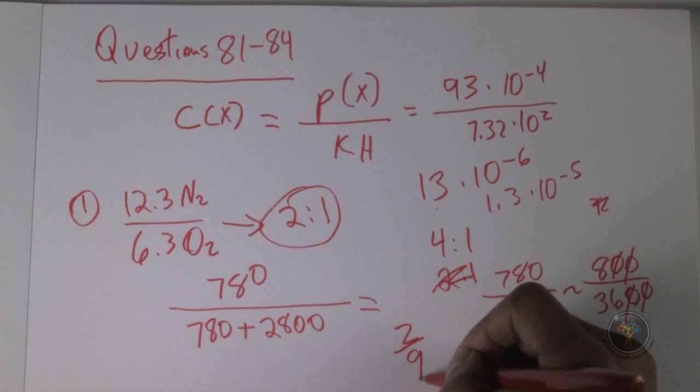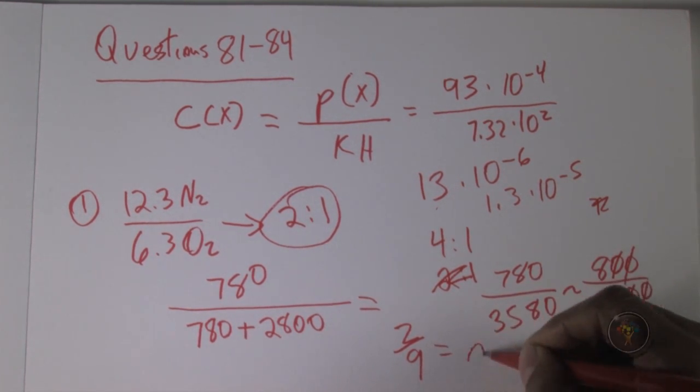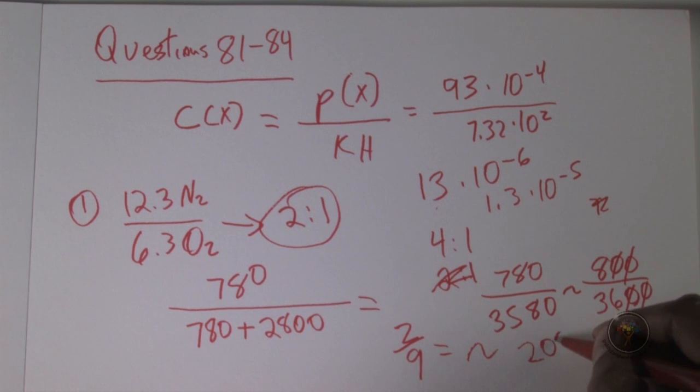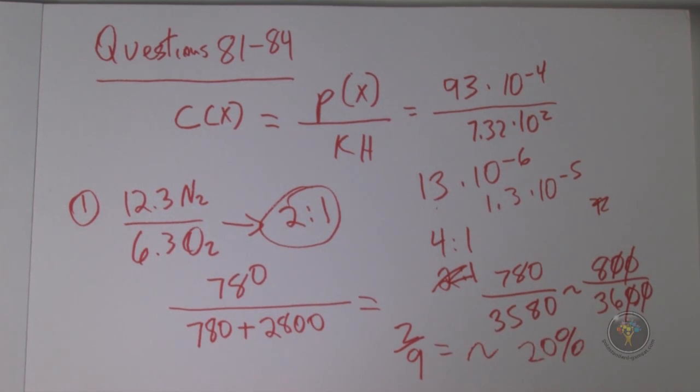So this approximates 20 percent, and there's nothing even close, so we don't need any more precise calculation. We have 20 percent oxygen, and that means necessarily it's 80 percent helium. So 84, the answer is D.